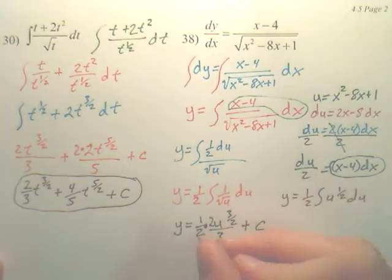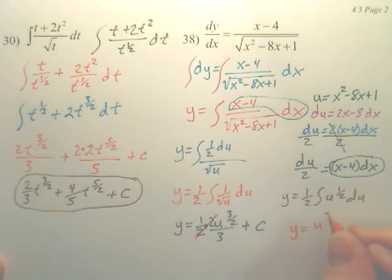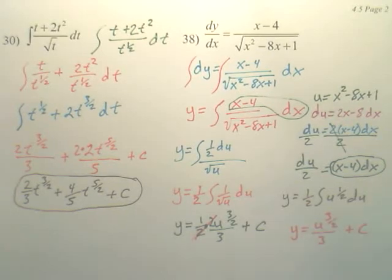That cancels. y equals u to the 3 over 2, over 3, plus c.